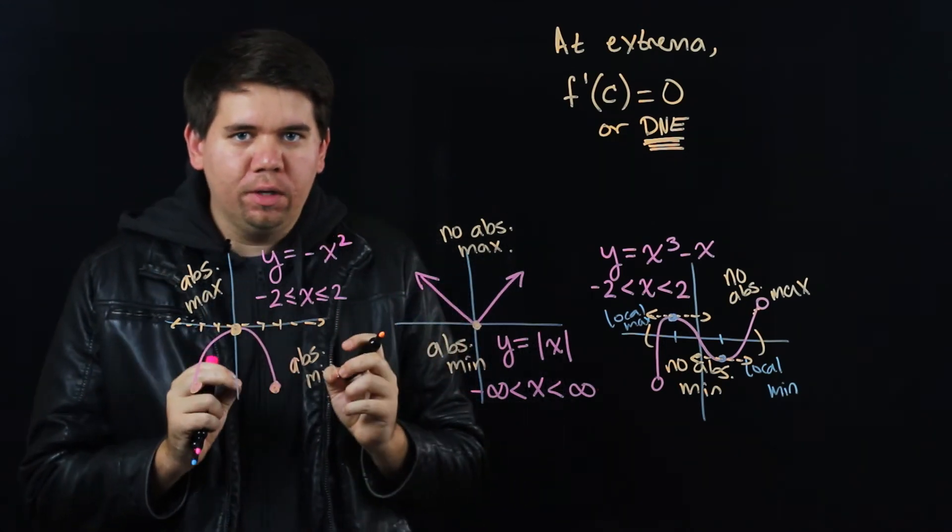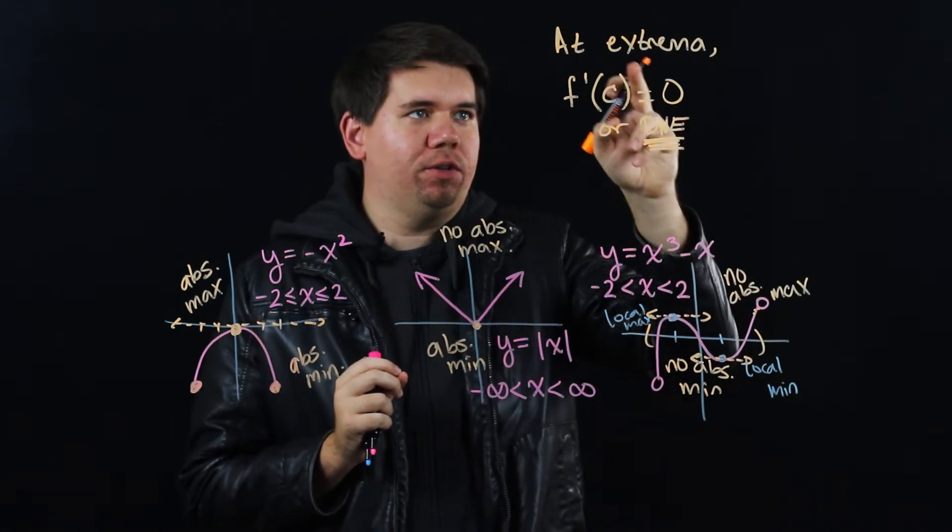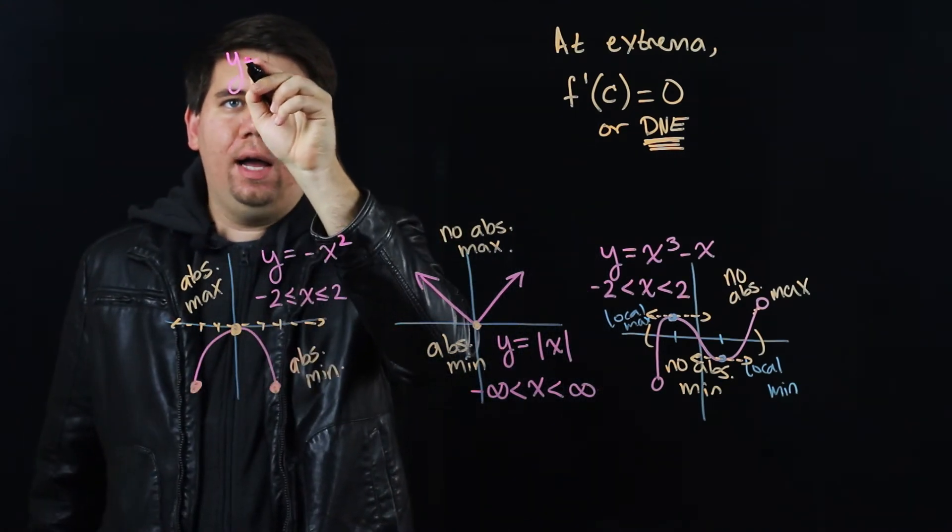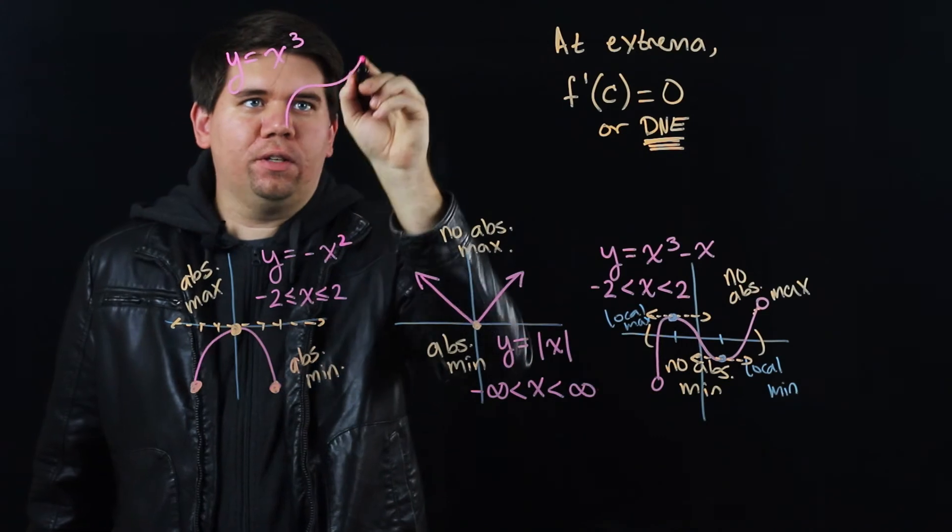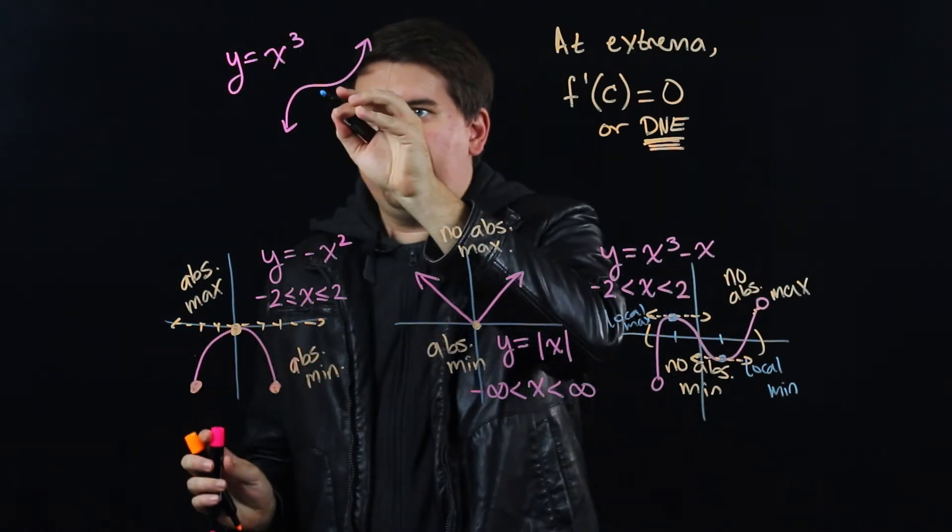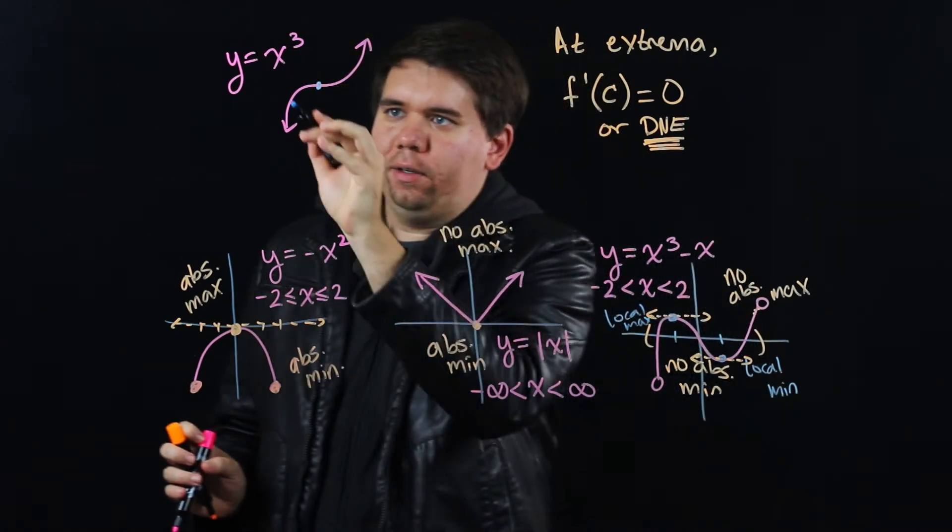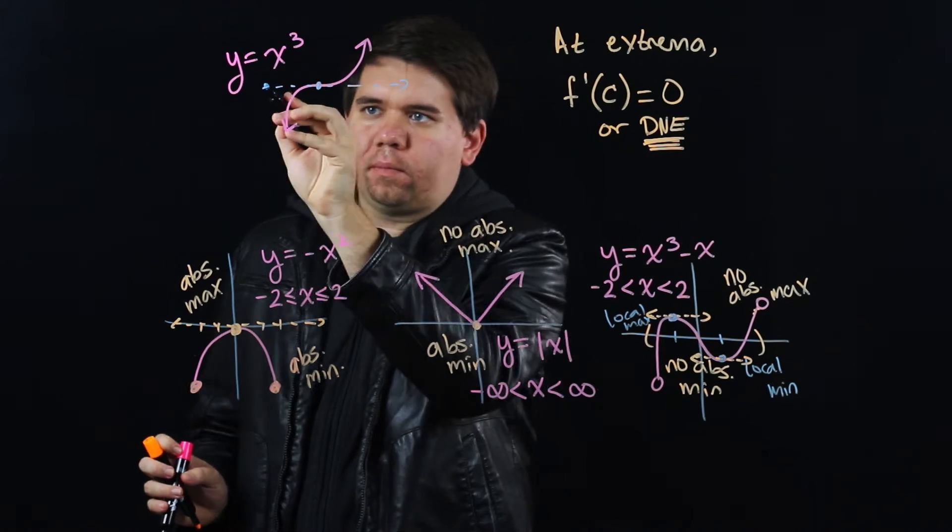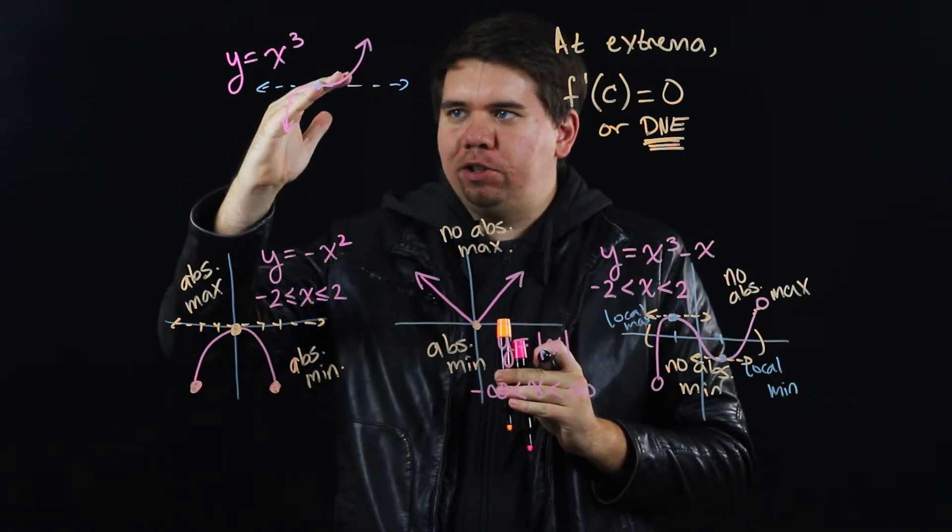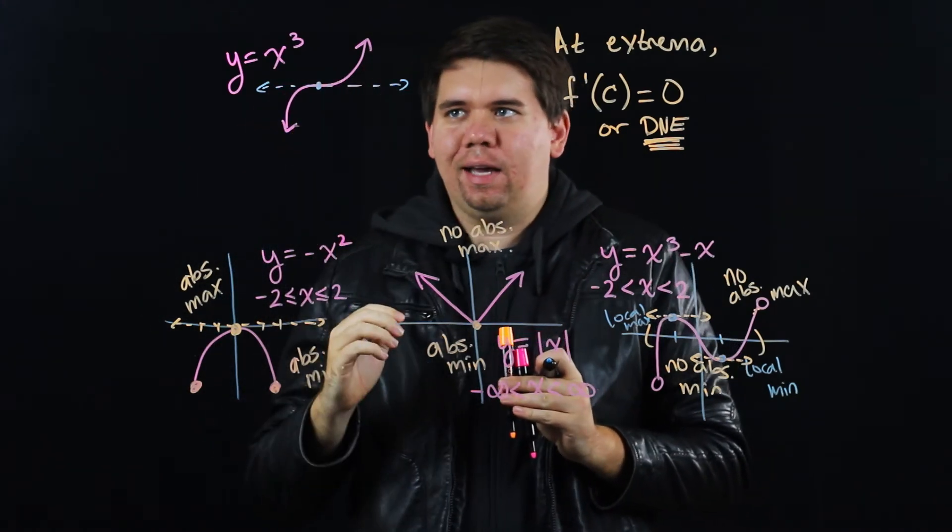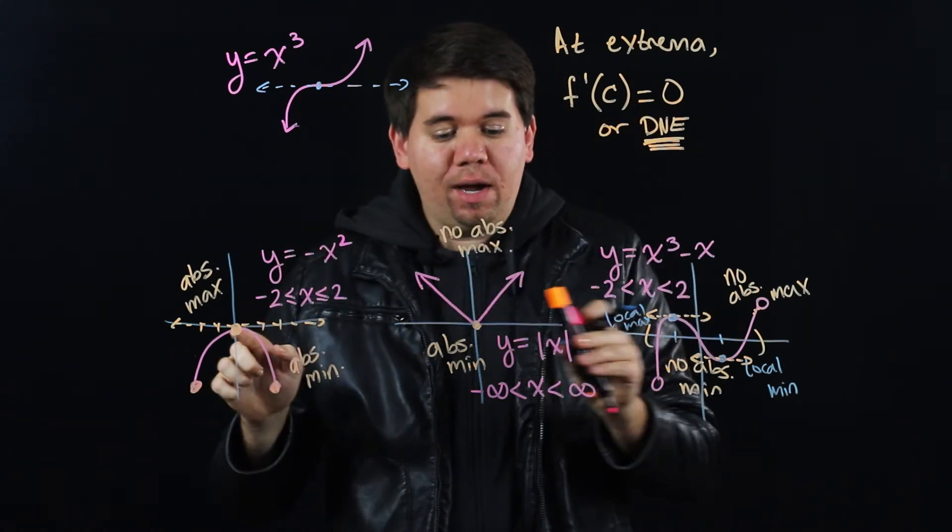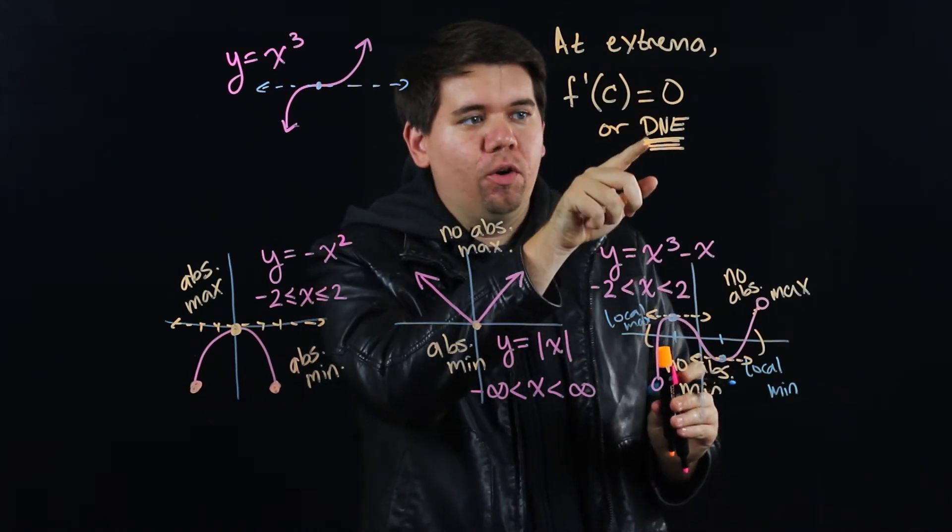Now, be careful. We're not saying that whenever the derivative is 0, you're at an extrema. That's not necessarily the case. For example, if you think about the graph of y equals x cubed, this graph looks something like this. And at the point x equals 0, your tangent line there will have slope 0. But that's not a maximum or a minimum. The graph was going up and just took a break for a moment before continuing to increase again. So just because your derivative is 0 doesn't mean you're necessarily at an extrema.